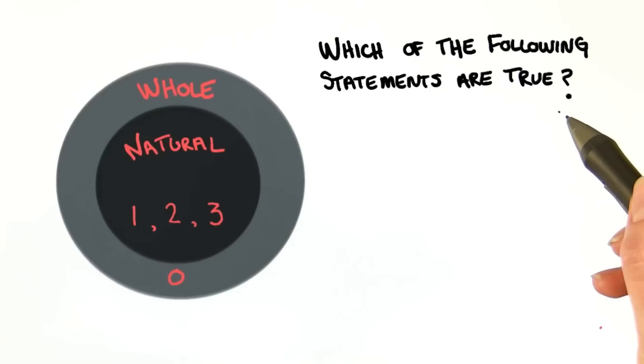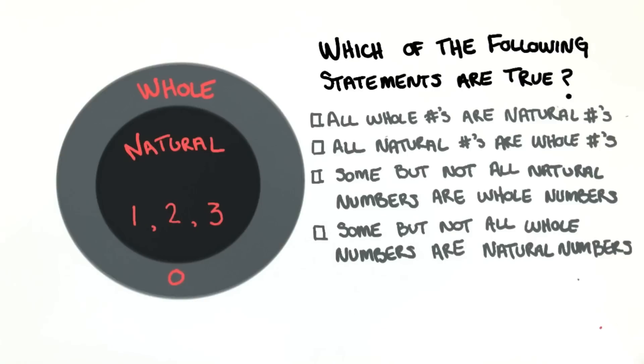Which of the following sentences accurately describe the relationship between the natural and the whole numbers? Please select as many as you think are correct.